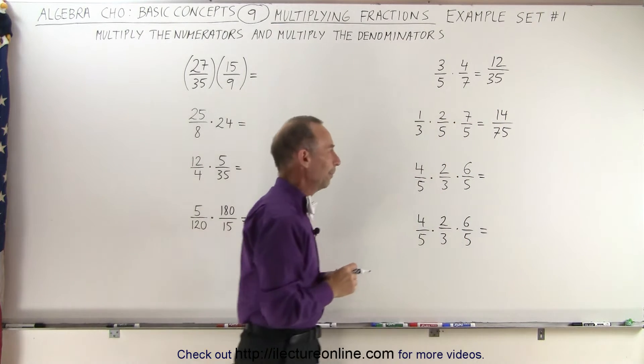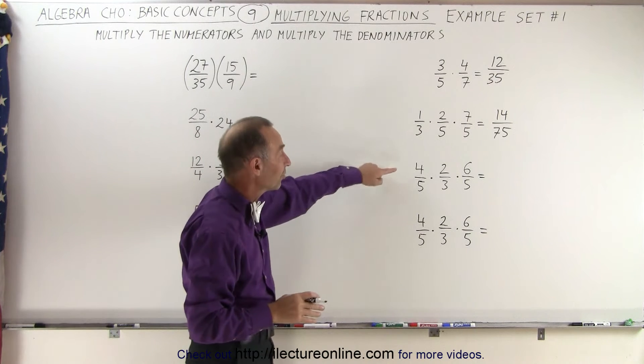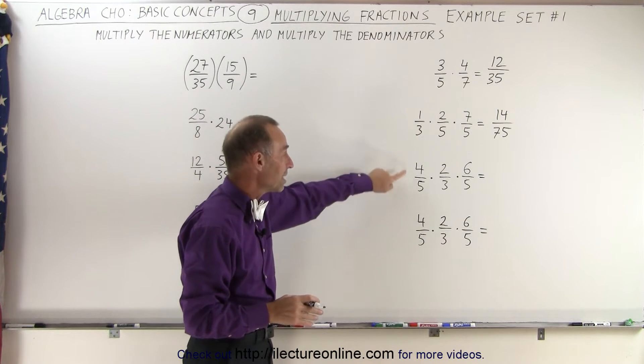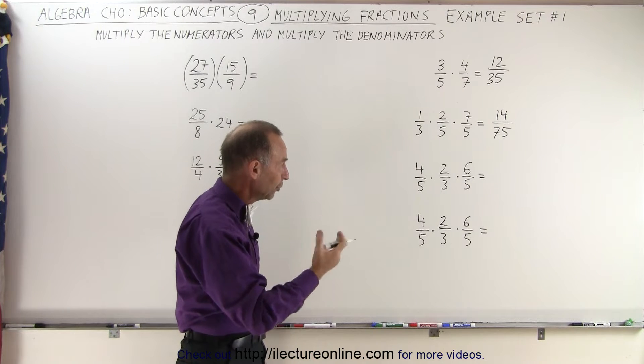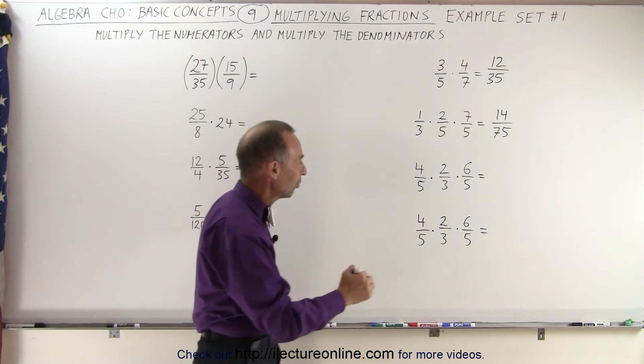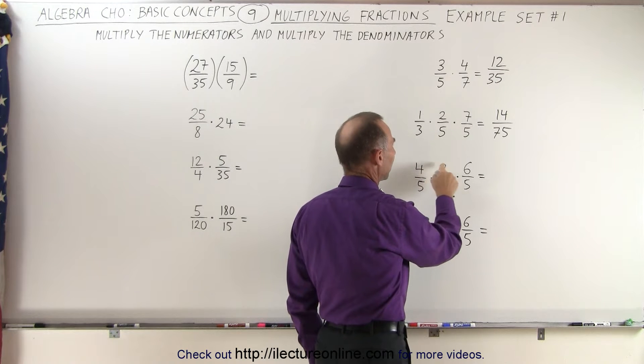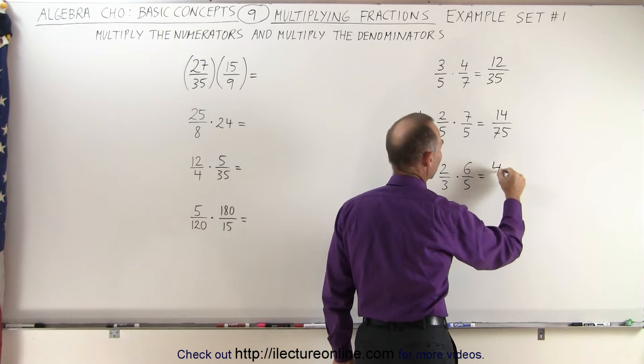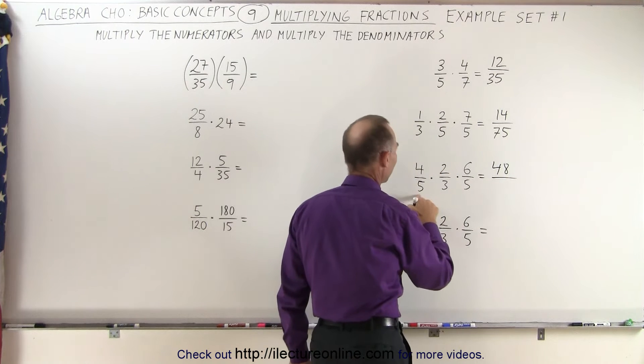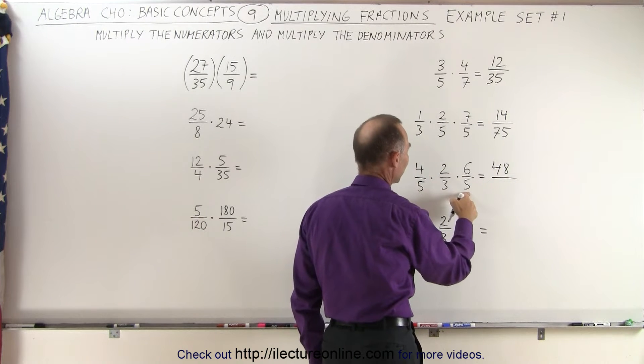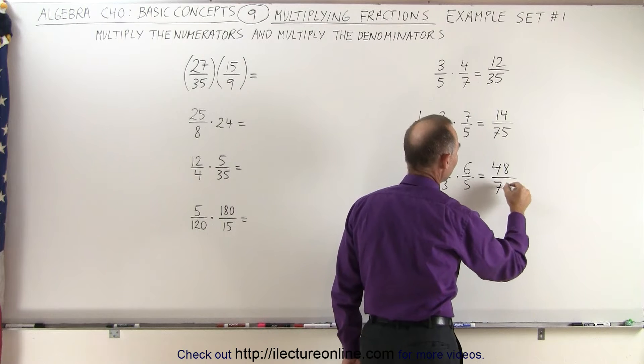Now notice the third exercise, we actually have it repeated here because we're going to do that one in two different ways. First we're simply going to multiply everything together. 4 times 2 is 8, 8 times 6 is 48. Then we divide that by 5 times 3 times 5. So 5 times 5 is 25, times 3 is 75.